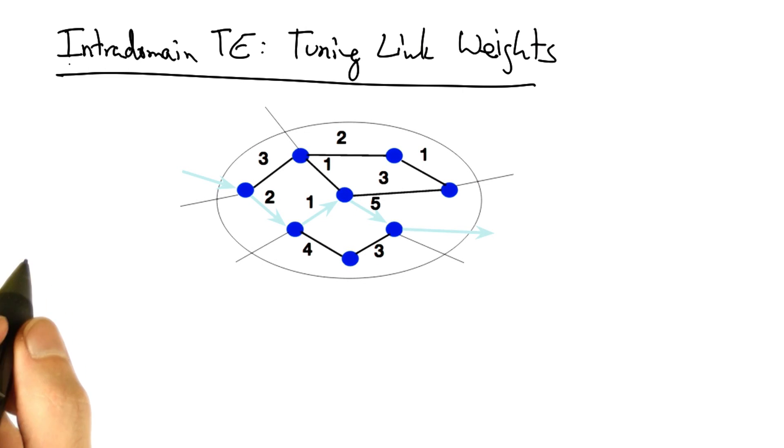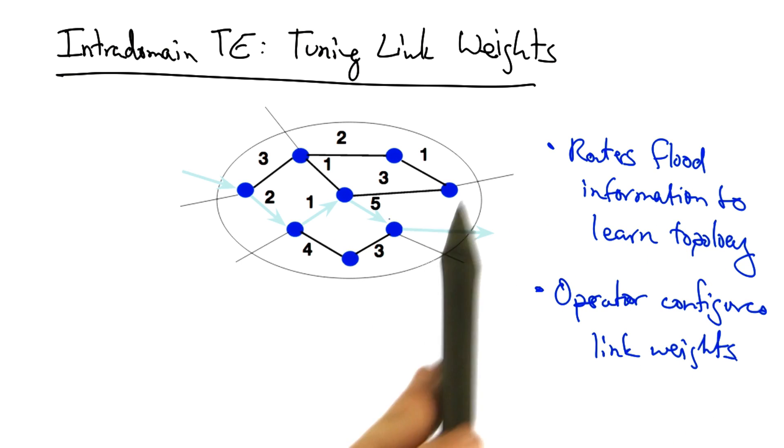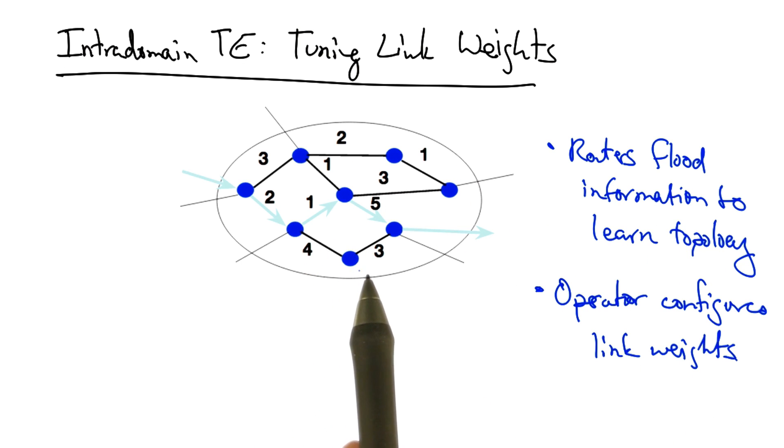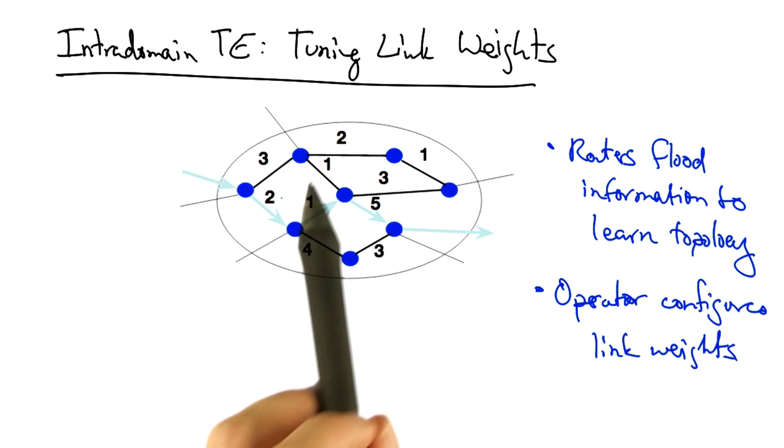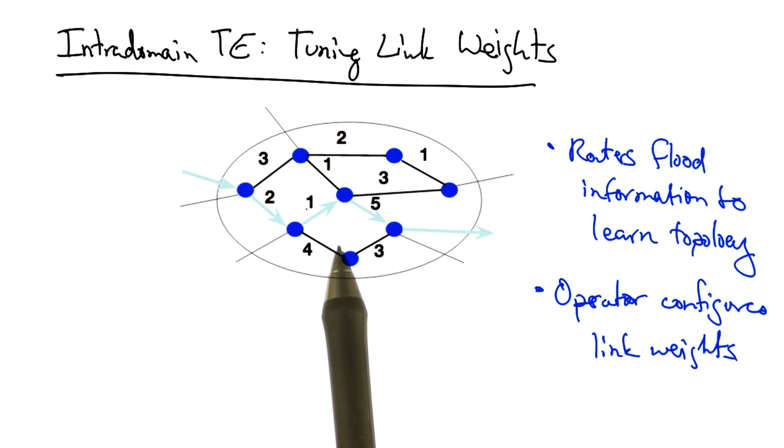Let's assume that we have a single autonomous system with static link weights as shown. In such a setup, routers will flood information to one another to learn the network topology, including the link weights on links connecting individual routers.